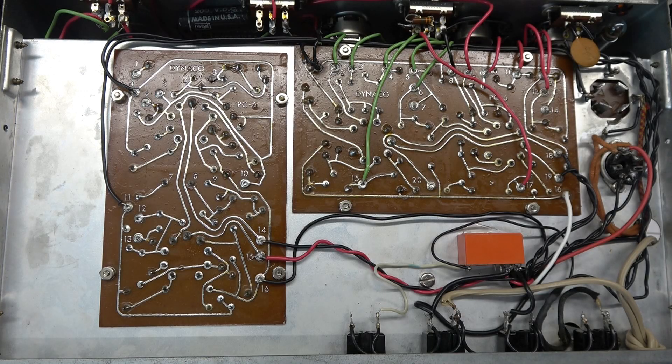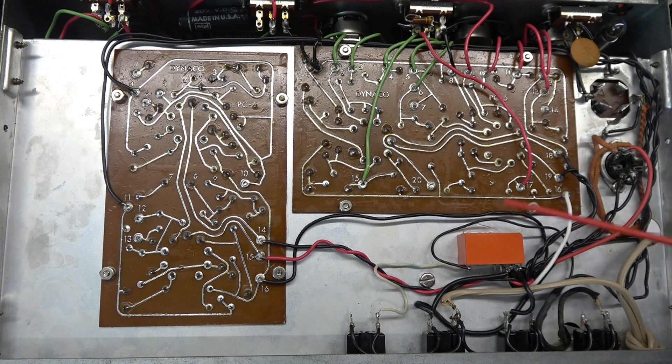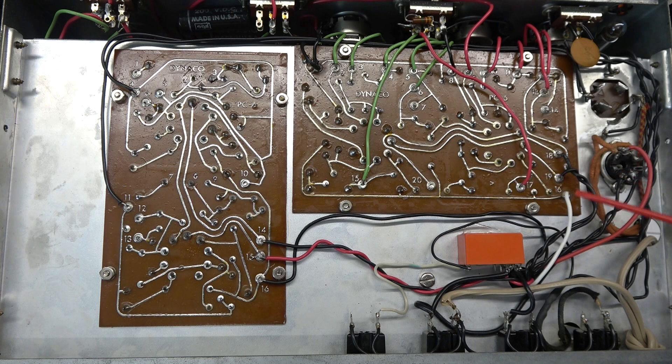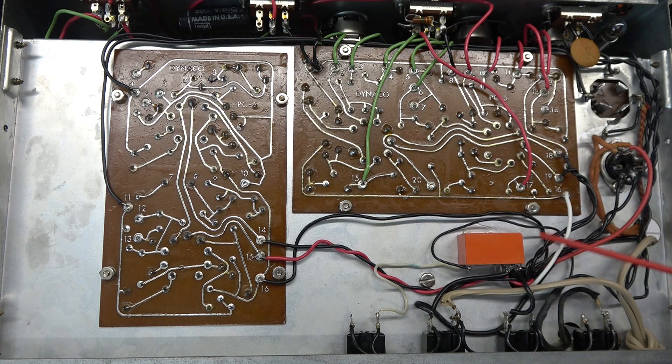To simplify the installation of the high current AC switching into your Dynaco preamp I've made a nice little line diagram. All you're actually adding is some wiring, the relay, and the new fuse. So let's go to the line diagram.